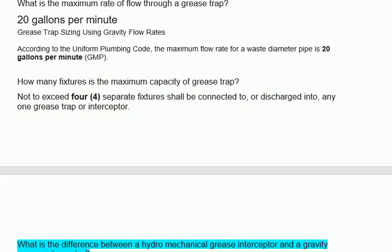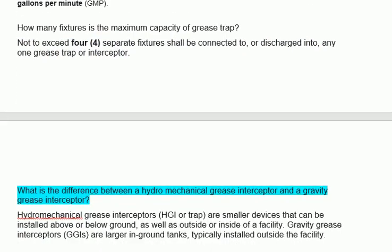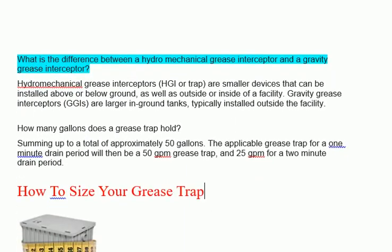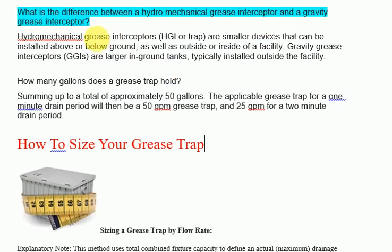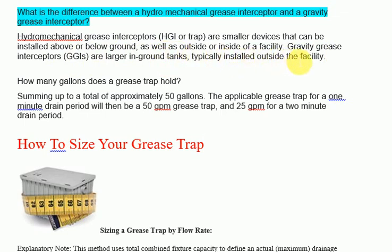What is the difference between a hydromechanical grease interceptor and a gravity grease interceptor? Hydromechanical grease interceptors (HGI) are smaller devices that can be installed above or below ground, as well as outside or inside a facility. Gravity grease interceptors (GGIs) are larger in-ground tanks typically installed outside the facility.